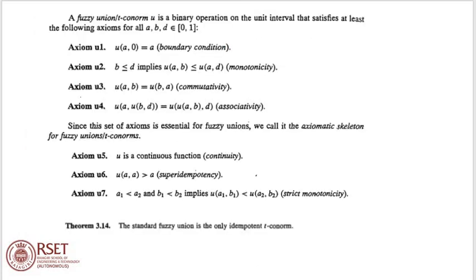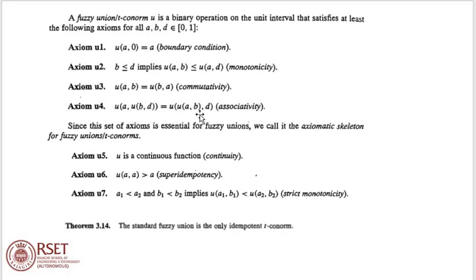A fuzzy union, or T-conorm, U is a binary operation on the unit interval that satisfies at least the following axioms for all A, B, D element of [0,1]. Axiom U1: U(A,0) = A. Axiom U2: B less than or equal to D implies U(A,B) less than or equal to U(A,D). U(A,B) = U(B,A), the commutative property. Associative property: U(A, U(B,D)) = U(U(A,B), D). It also satisfies continuity, super-idempotency and strict monotonicity.